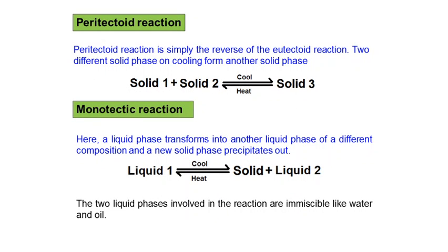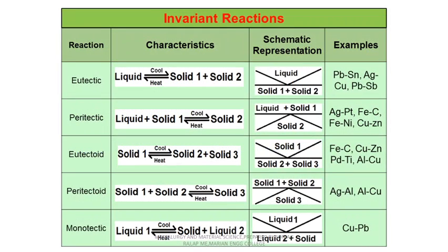Another type of invariant reaction is: solid one plus solid two transforms to solid three — this is the peritectoid reaction. There is also the monotectic reaction where a liquid transforms to a solid plus liquid. We need to know what these reactions represent and examples for each: eutectic reaction — liquid to solid one plus solid two, examples include the lead-tin and silver-copper phase diagrams; peritectic reaction — liquid plus solid to another solid, example is the silver-platinum phase diagram.